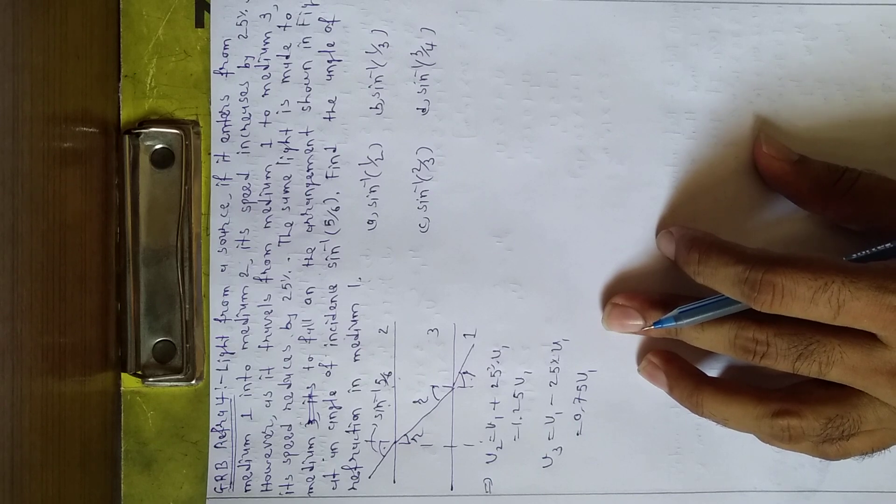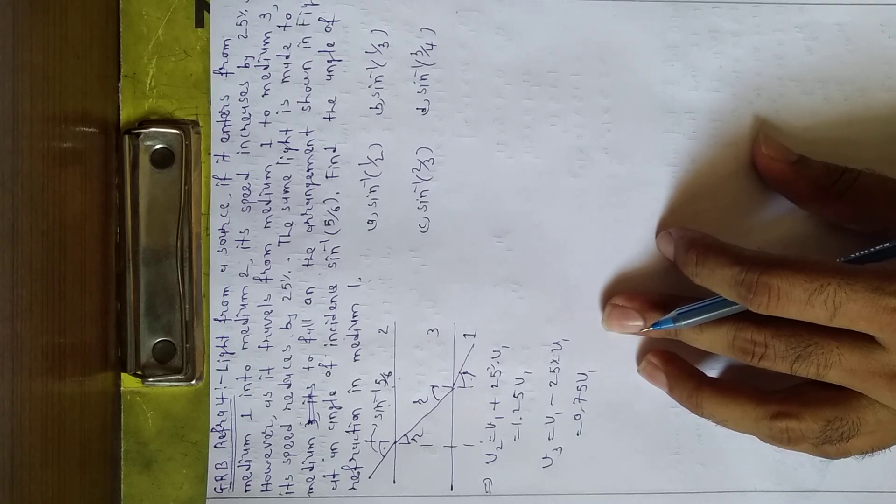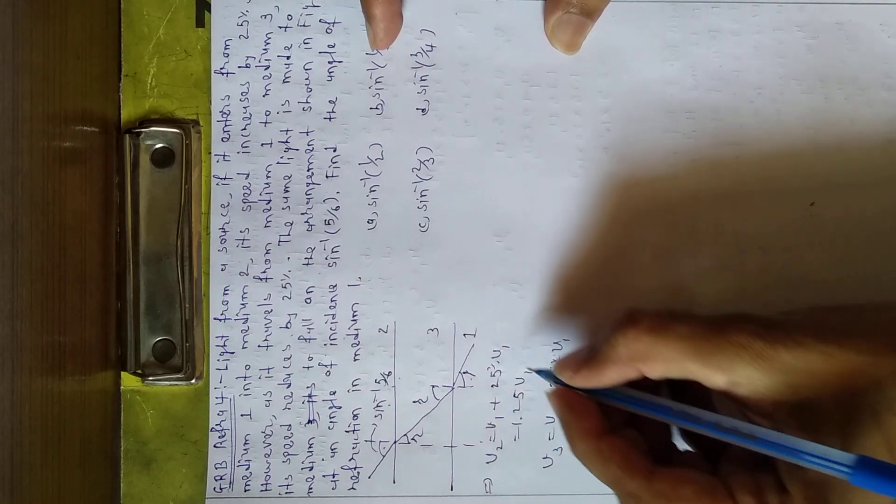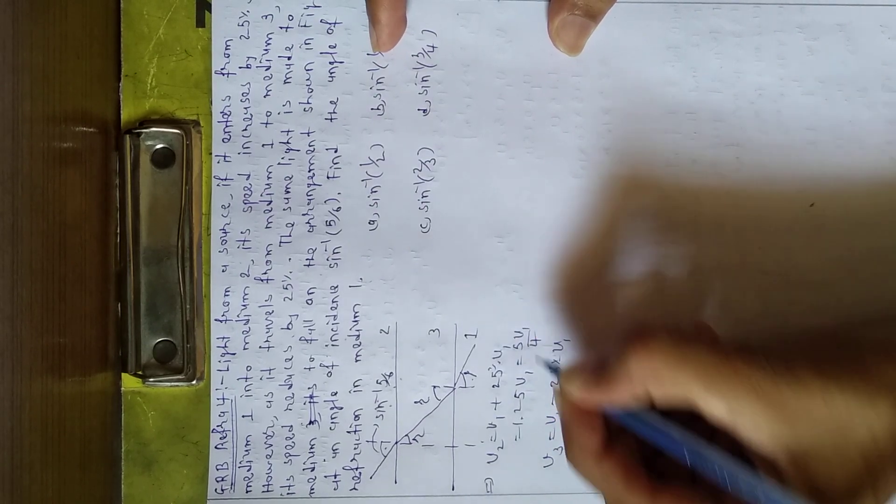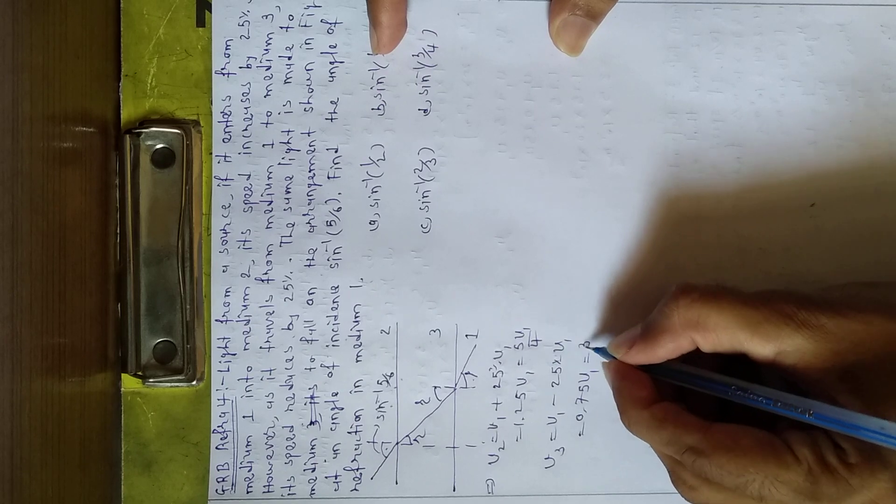So now according to Snell's law, we can write 5v1 by 4 and here we can write 3v1 by 4.